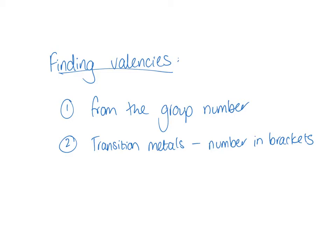Sometimes the element doesn't have a group number — for example, if it is in the transition metal block. If that is the case, you should be given a number in brackets after the element's name. So it could be something like iron with three in Roman numerals in brackets, which would mean iron has a valency of three. For some transition metals you can check the back of the periodic table for elements like zinc or copper.